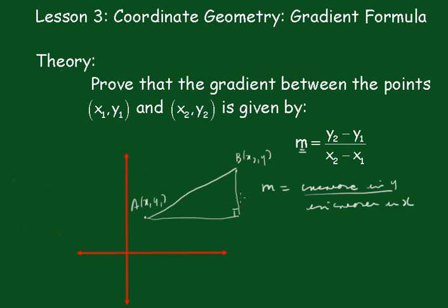Now the increase in y is this distance here which is simply y₂ minus y₁, and the increase in x is x₂ minus x₁. So m is equal to y₂ minus y₁ over x₂ minus x₁.